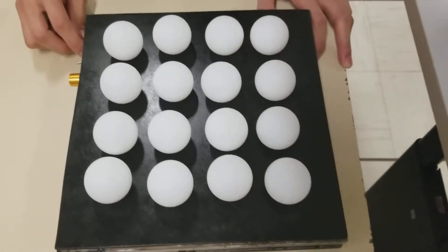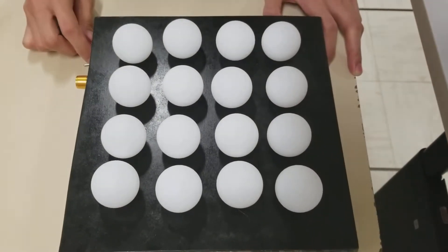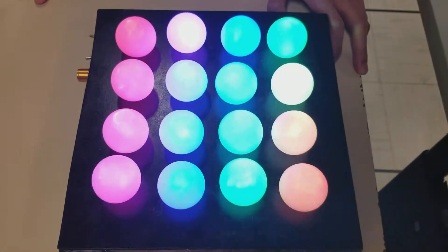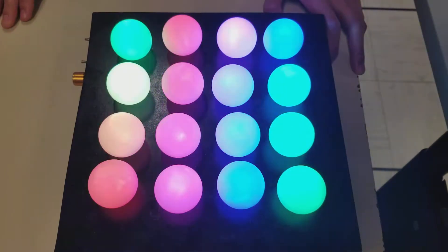So I'm going to turn on the 4x4 RGB LED matrix, and here it's operated by Arduino, and here's the first pattern, it's called rainbow.